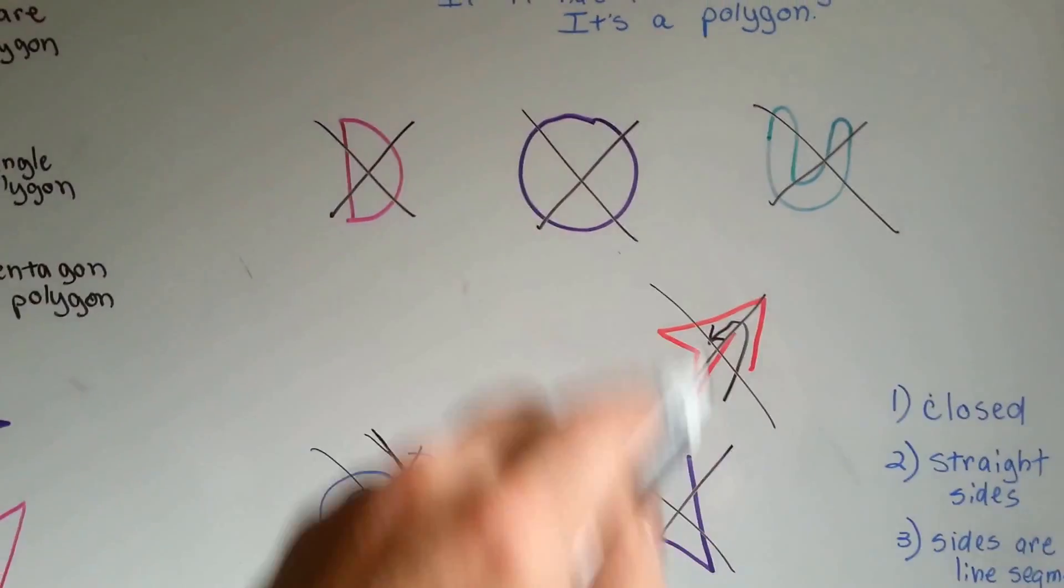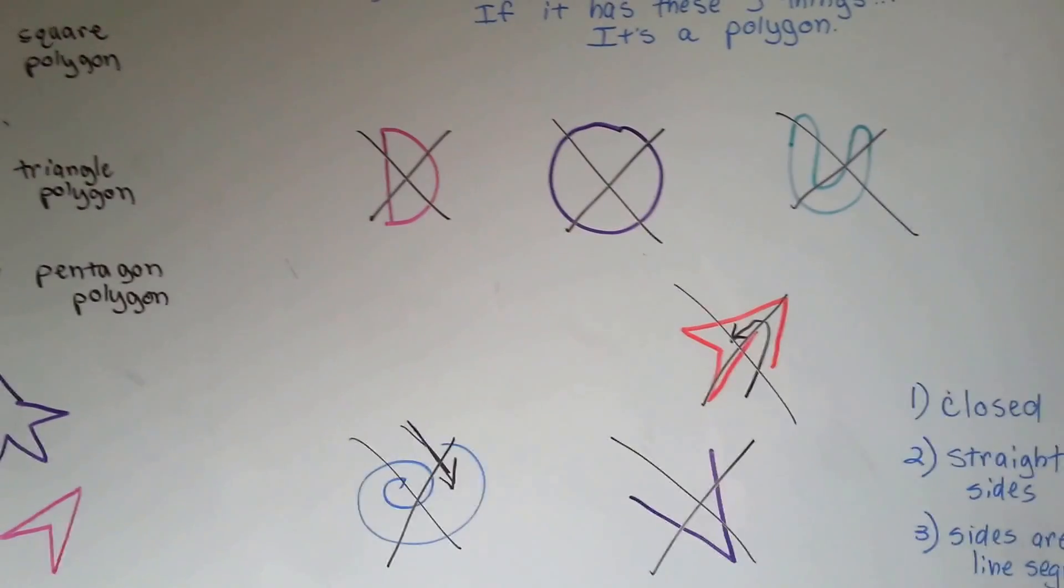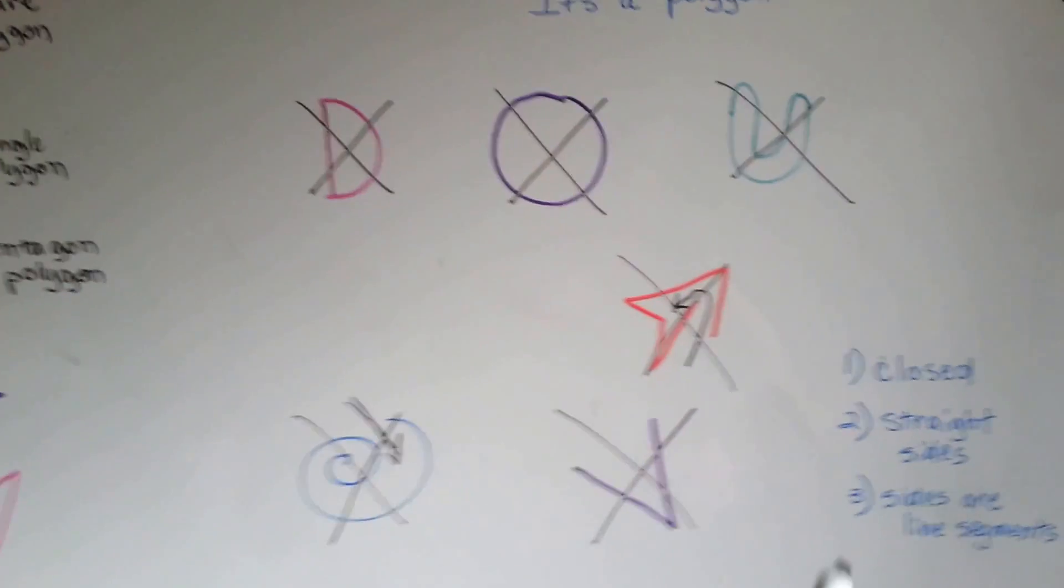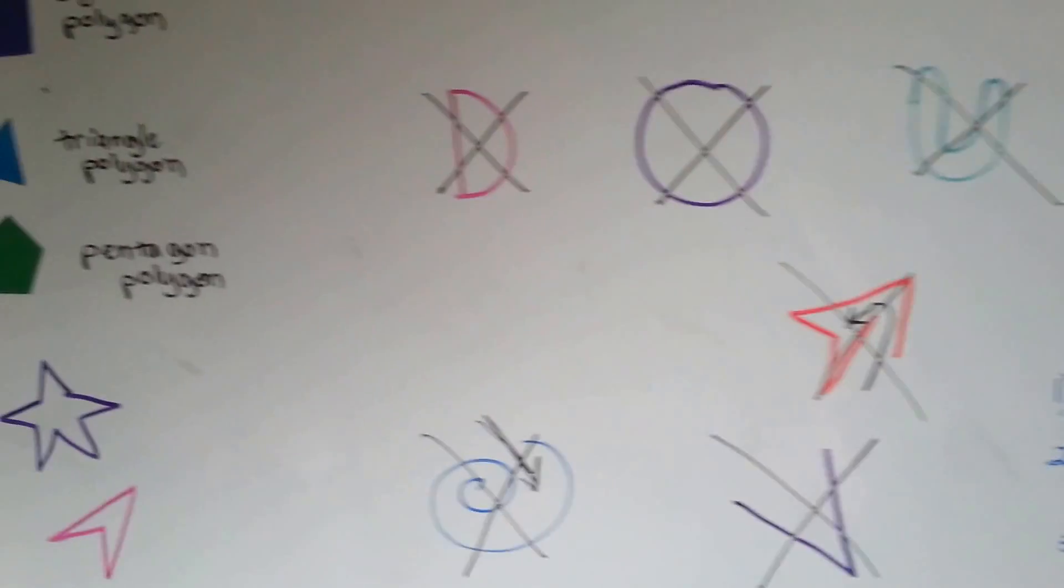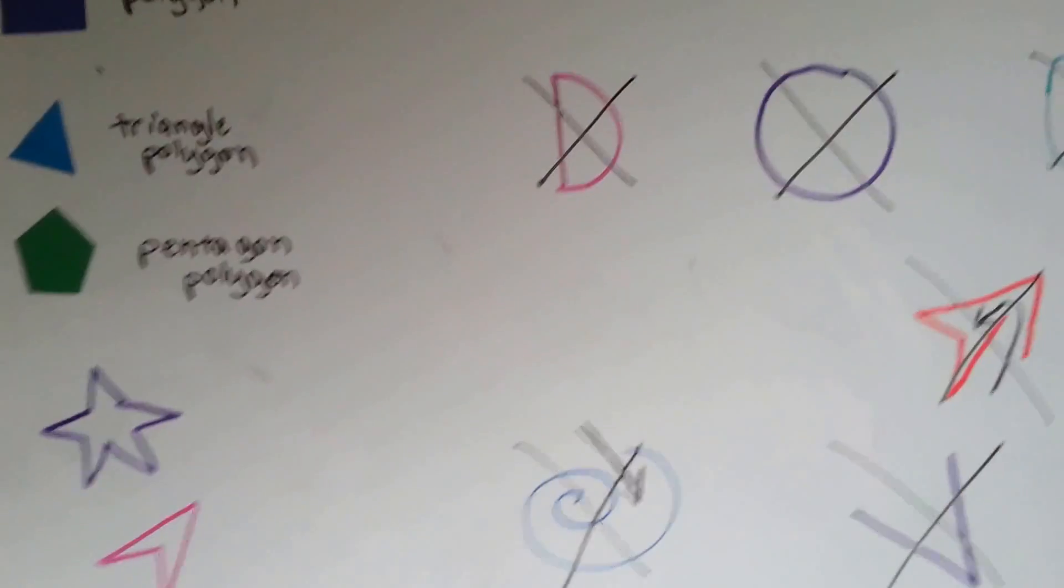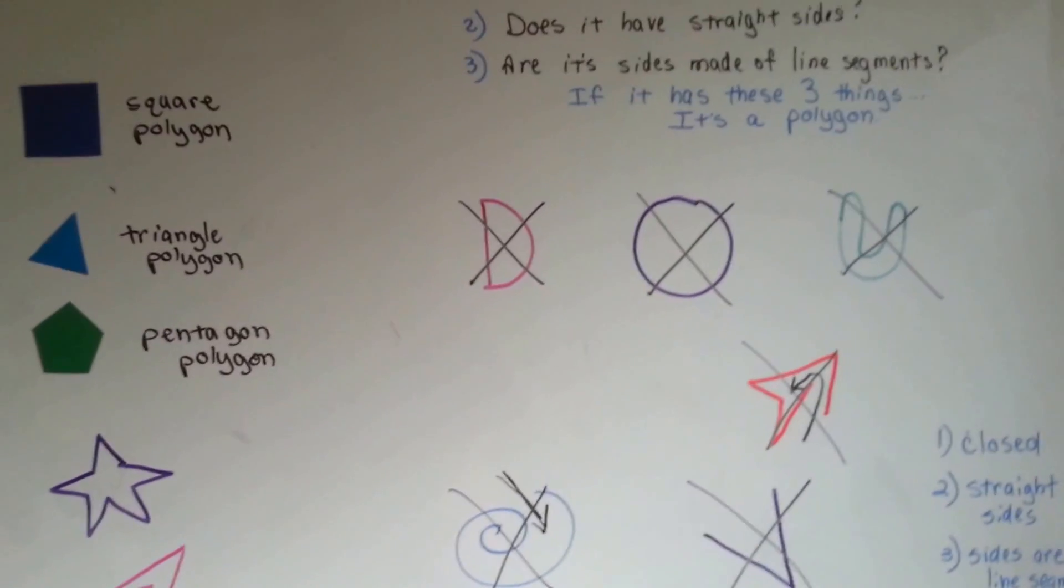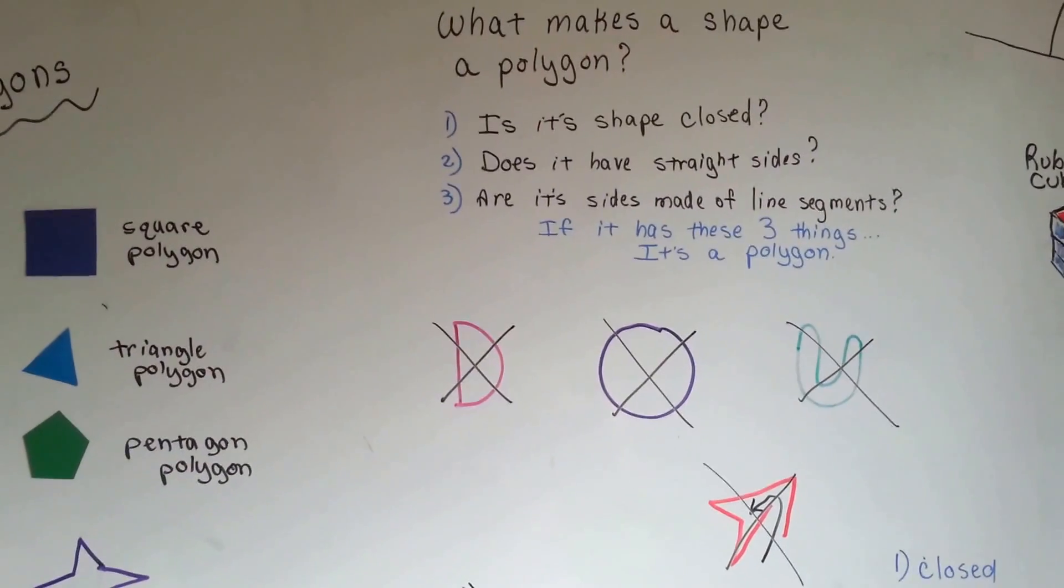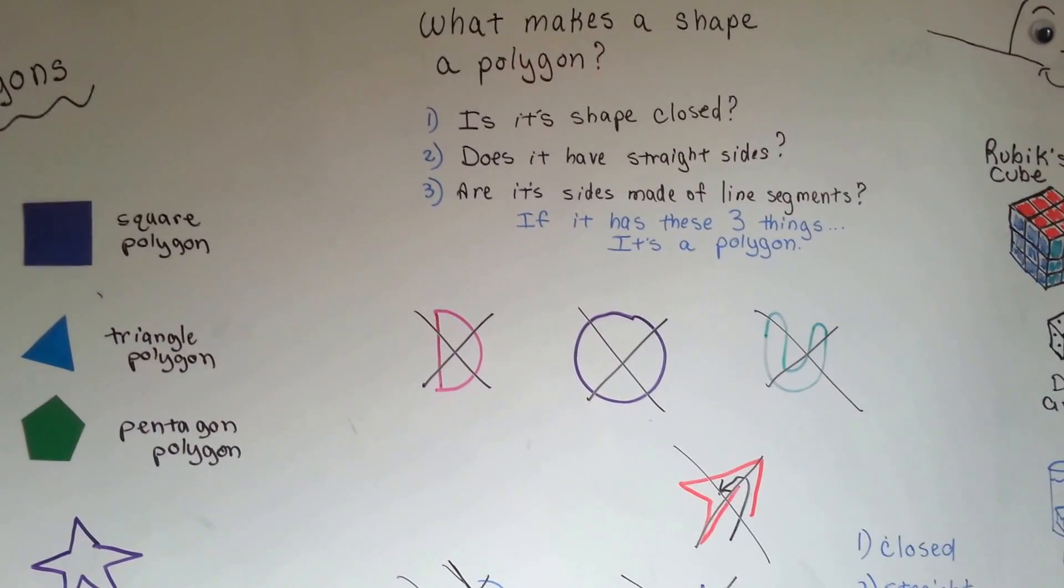So none of these were polygons. But these are because they're closed, they have straight sides, and their sides are made out of line segments. If they have these three things, then yes, they are polygons. See that wasn't that hard, was it? We're going to talk about lines and line segments next. See you there.